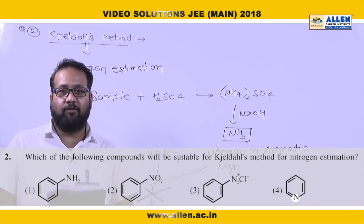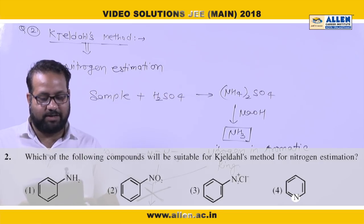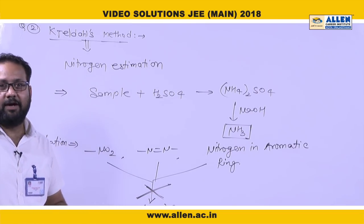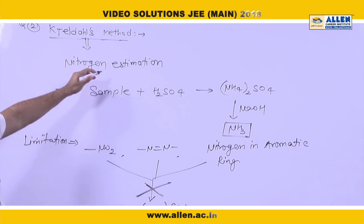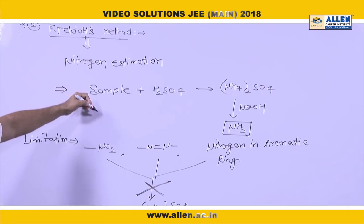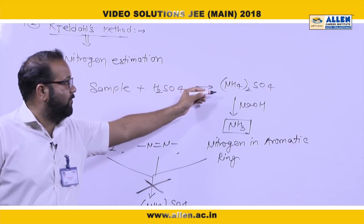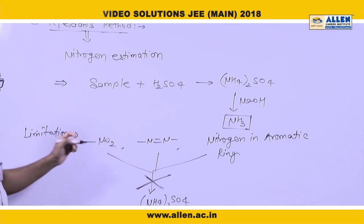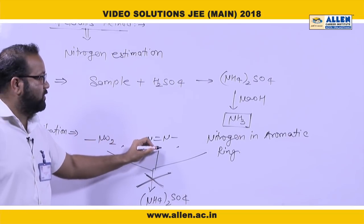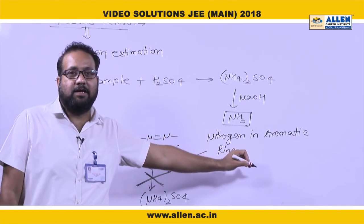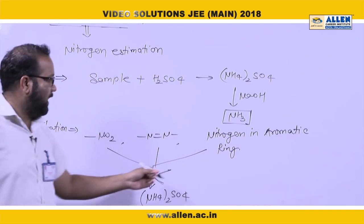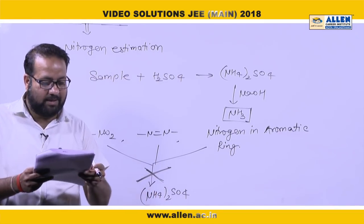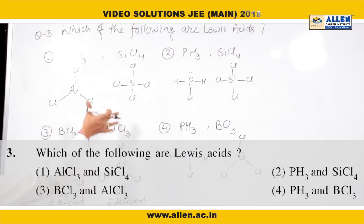Question 2: Which compound is suitable for the Kjeldahl method for nitrogen estimation? The Kjeldahl method is used for nitrogen estimation in organic compounds, where the sample is heated with H₂SO₄ to form ammonium sulfate, which reacts with NaOH releasing ammonia. However, for nitro groups, azo groups, and nitrogen present in an aromatic ring, the Kjeldahl method is not used because they cannot form ammonium sulfate. So the right answer is option one.